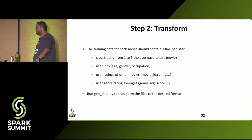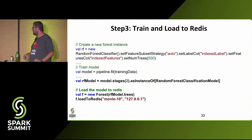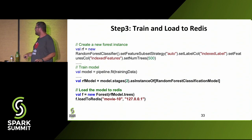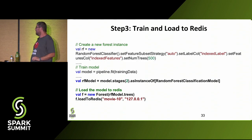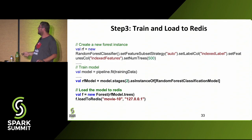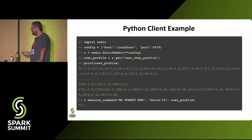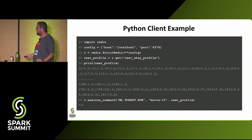Then we train our model and load it to Redis. In short, you create your random forest classifier, decide the number of trees, and do this for each of the output files. Then you train the model and load it to Redis so it is ready to be served. The execution in Redis is really quite simple. From a Python client, you import the Redis client library, open a connection to localhost on the default Redis port 6379, and create an instance.